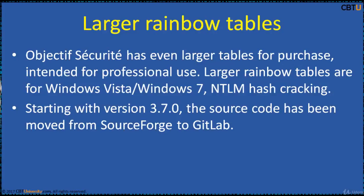These larger rainbow tables are intended for professional use and cover Windows Vista, Windows 7, and NTLM hash tracking. Starting with version 3.7, the source code has been moved from SourceForge to GitLab.